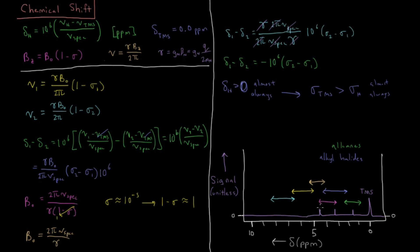More electron-withdrawing groups decrease shielding and thus increase chemical shift. Moving further, protons on a carbon adjacent to an ether group appear at an even higher chemical shift. Alcohols appear next at still higher shifts. Getting above 5 ppm, we find protons attached to double bonds in alkenes. Near the high end of the typical proton spectrum are aromatics, which have some of the highest chemical shifts observed for protons.